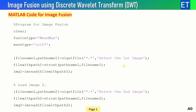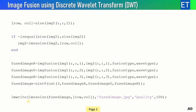Now let's look at the MATLAB code. First, we define the fusion type — for example, mean-max is given here, but you can change this string to any of the nine combinations. Then you choose the wavelet type; coiflet 5 is used here for decomposition, but any wavelet can be used. Using uigetfile, a dialog box will appear asking you to choose your first image, which goes into variable IMG1. The same process selects the second image into IMG2.